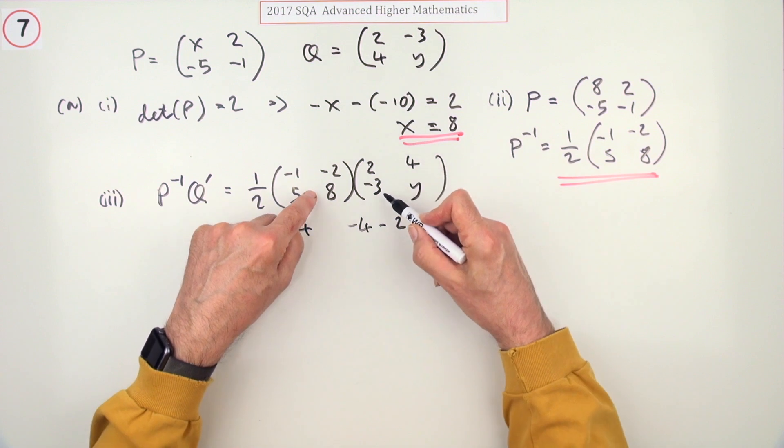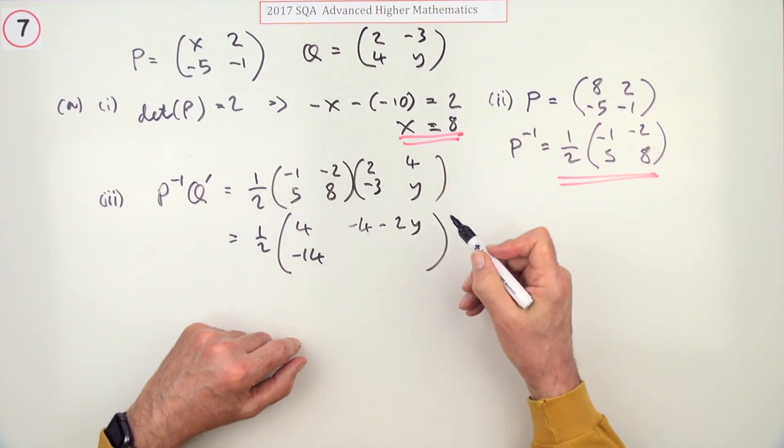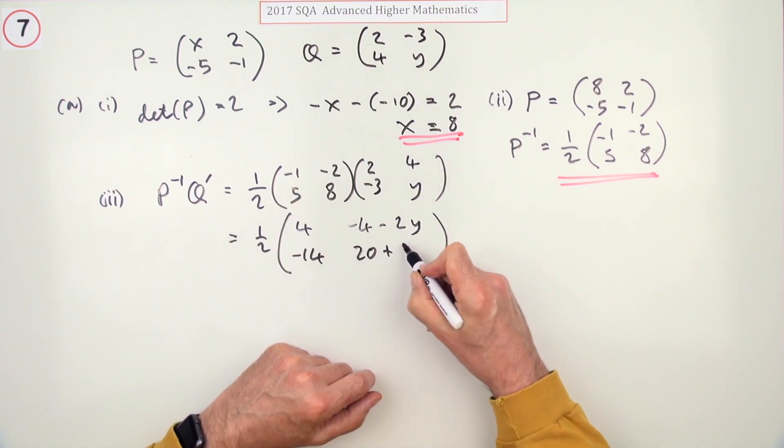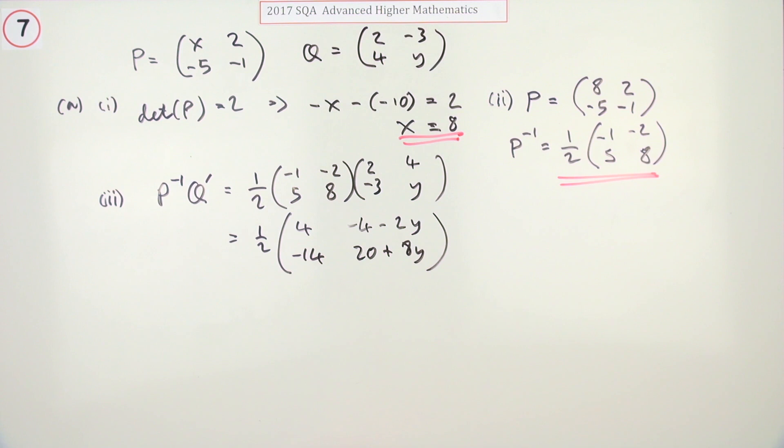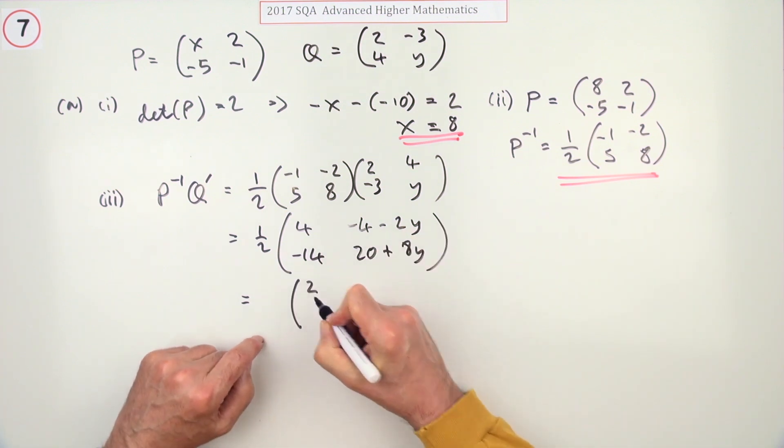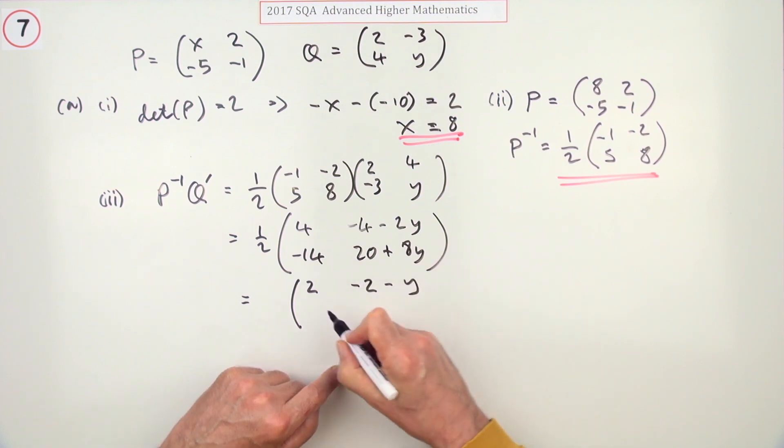You've got 10 - 24, so that's -14, and 20 + 8y. You can absorb that factor of a half inside and drop all those numbers by 2, so that goes to 2, that's -2 - y, that's -7, and that's 10 + 4y.